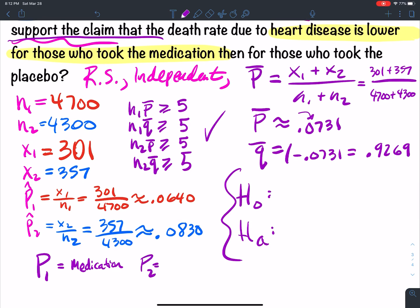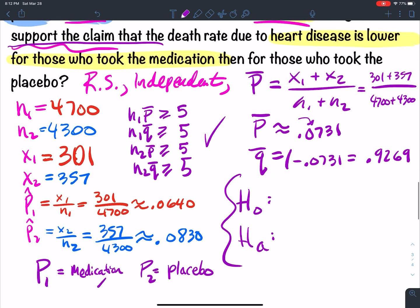P2 is going to be the placebo, percentage of your death rate.